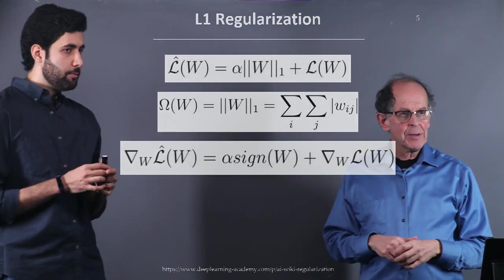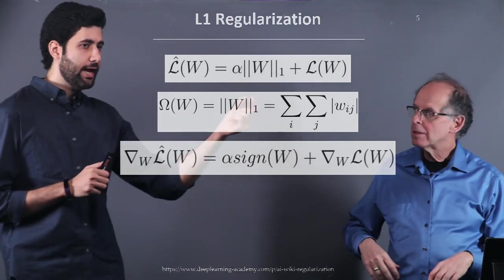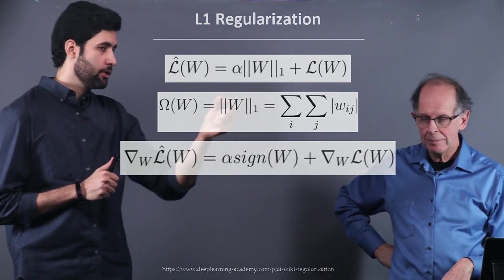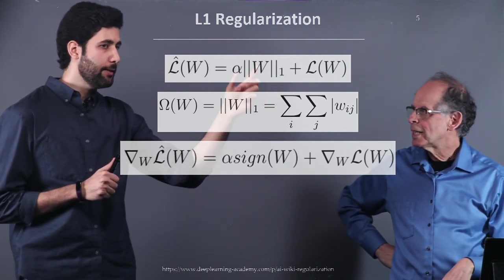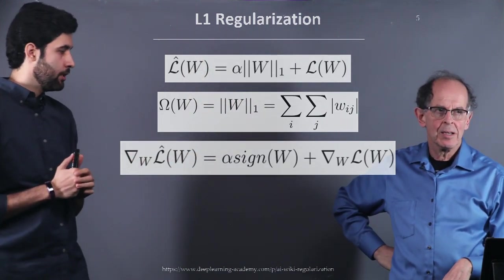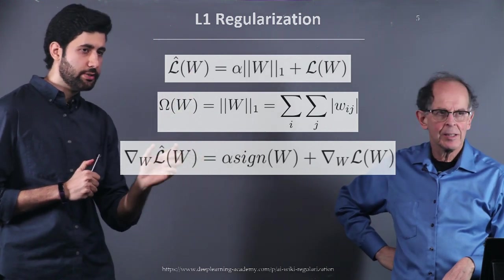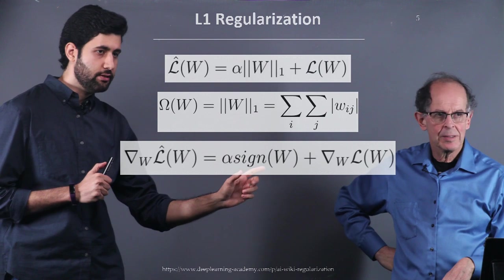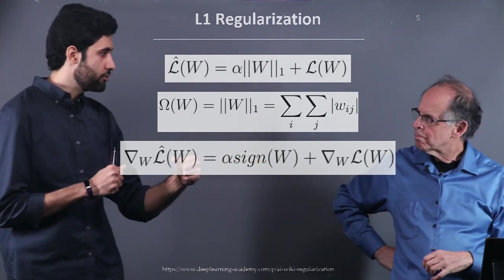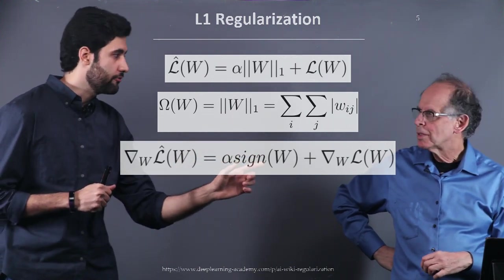So another common choice for regularization is just adding the absolute value of the weight to the loss function. So here we are just minimizing the absolute value of the weights, which is called L1 regularization. So again, if you look at this expression in terms of gradients, we can see that the way that the weight is pulled towards zero, here is not proportionate to the value of W. Here is just proportionate to the sign of W.